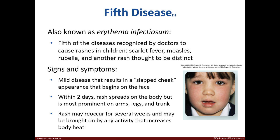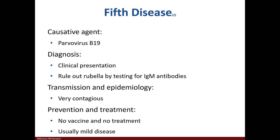Fifth disease is also known as erythema infectiosum. It's the fifth disease identified that causes rashes in children, and it presents itself as a slapped cheek appearance. The rash then spreads to the rest of the body and may reoccur for weeks. The causative agent is parvovirus B19. It can be diagnosed in the clinic with a characteristic rash or by testing for antibodies to rule out rubella. The mode of transmission is via droplet and direct contact, and there is no vaccine or treatment.